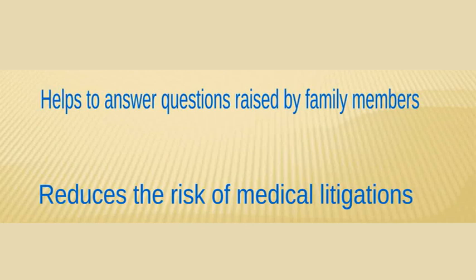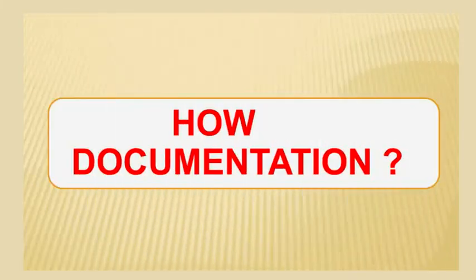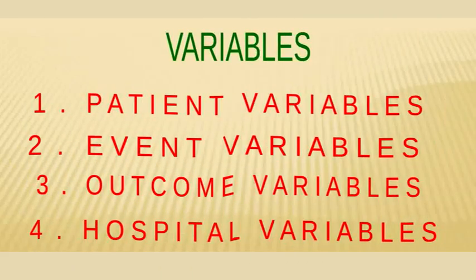Now let's see how this documentation is done. There are four distinct variables: patient variables, event variables, outcome variables, and hospital variables. These are the four variables in which we can document the whole event. Of these, the first three variables are of very great importance; hospital variables are mainly for academic purposes.